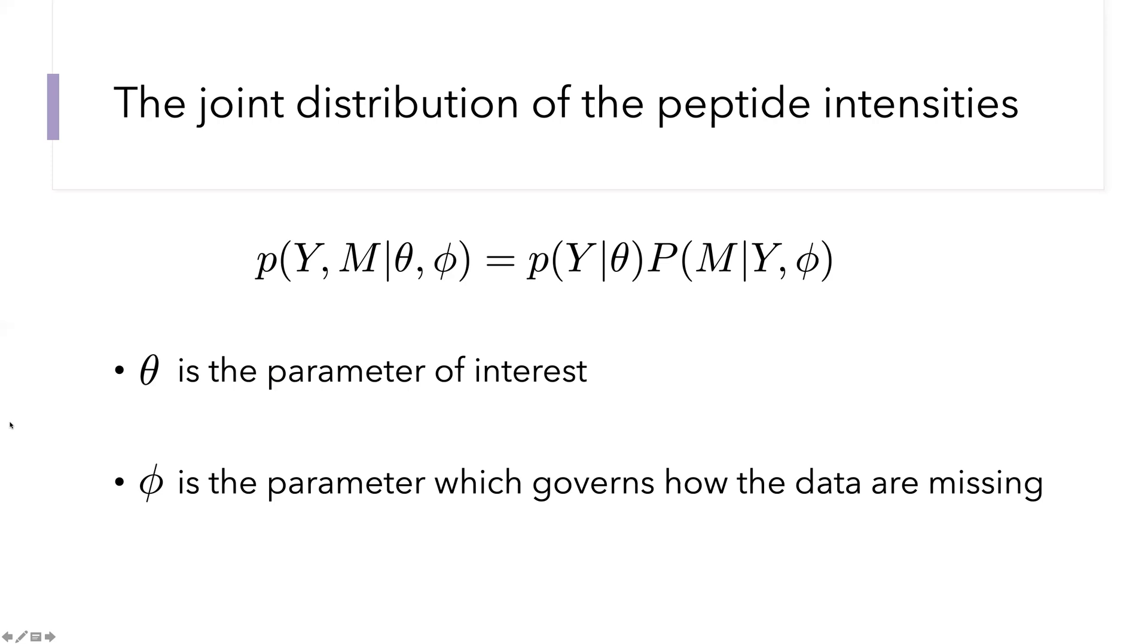As before, theta is the parameter of interest. Phi, you can think of as a nuisance parameter, which basically tells us something about which values are missing and how they relate to the intensities of the peptides.